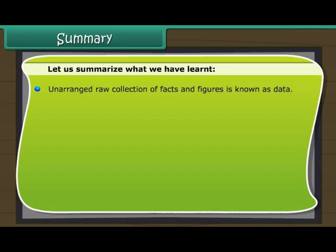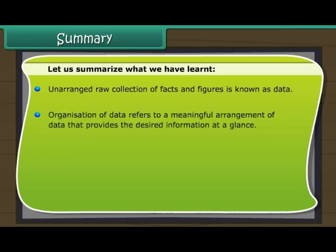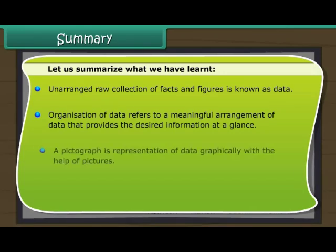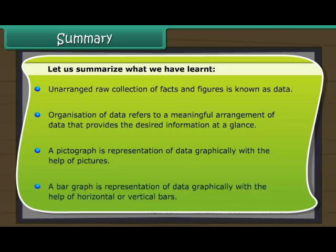Summary. Let us summarize what we have learned. An unarranged raw collection of facts and figures is known as data. Organization of data refers to a meaningful arrangement of data that provides the desired information at a glance. A pictograph is a representation of data graphically with the help of pictures. A bar graph is a representation of data graphically with the help of horizontal or vertical bars.